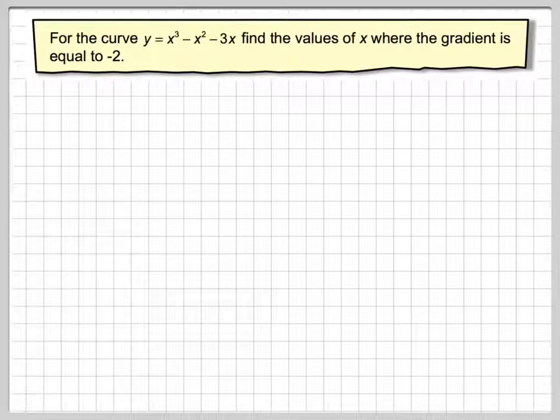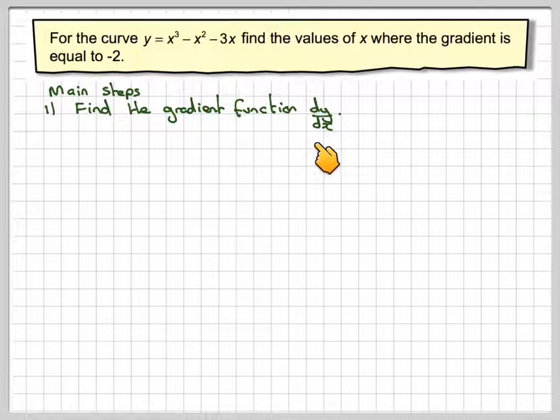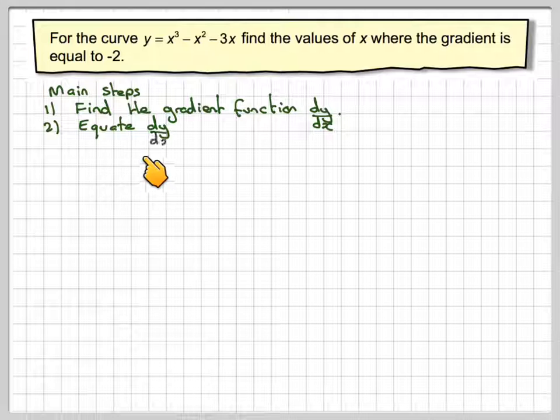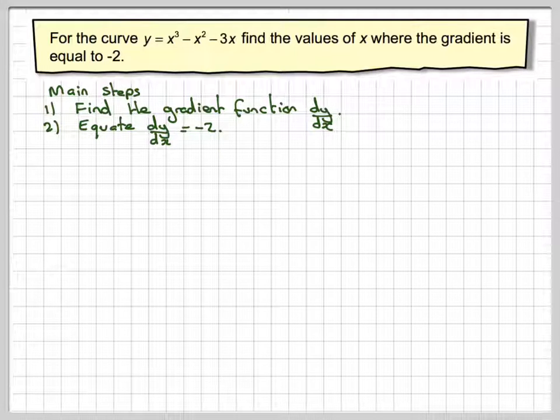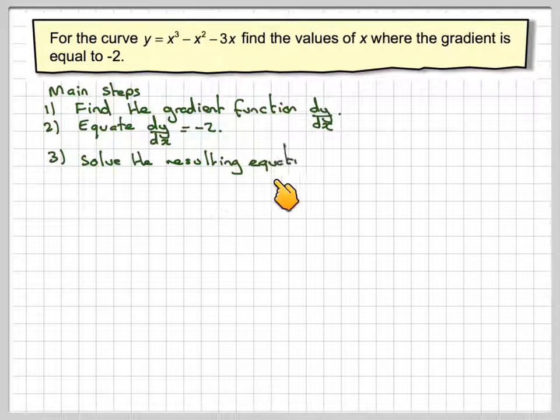Let's have a look at the main steps. Number one, you need to find the gradient function dy by dx. Number two, equate dy by dx and put it equal to minus 2. Number three, solve the resulting equation.